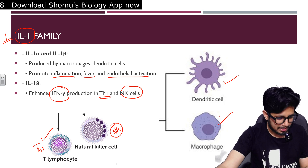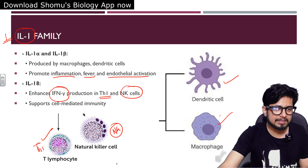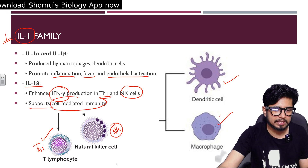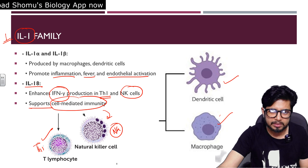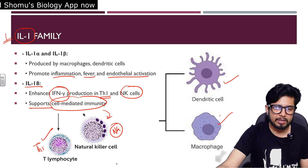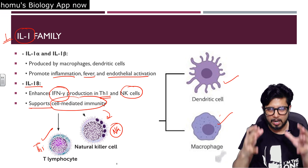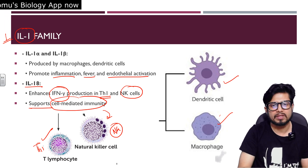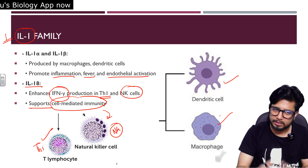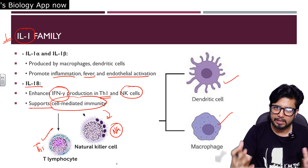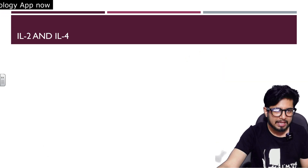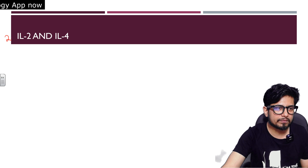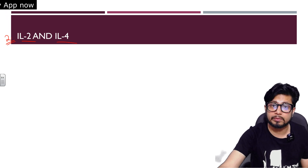Interleukin-18 also supports cell-mediated immunity, because it is linked to natural killer cells, dendritic cells, and macrophages. Natural killer cells and macrophages are part of our cell-mediated immunity and the innate mode of immunity, so they make a really important contribution to cell-mediated immunity. The next category of interleukins is interleukin-2 and interleukin-4.